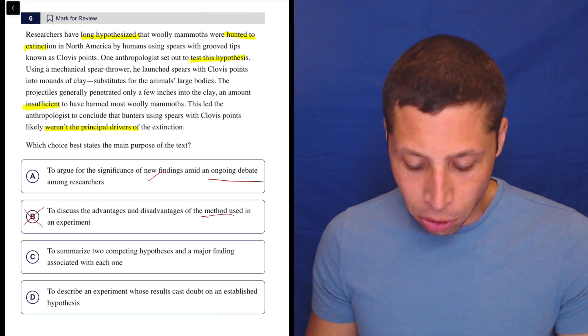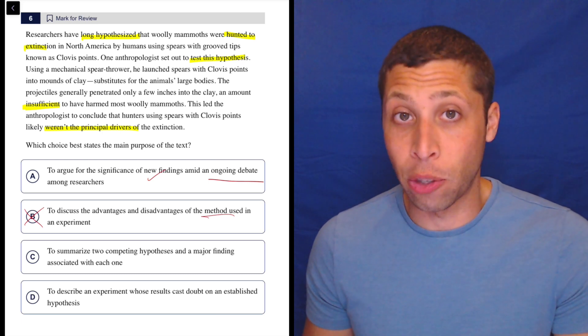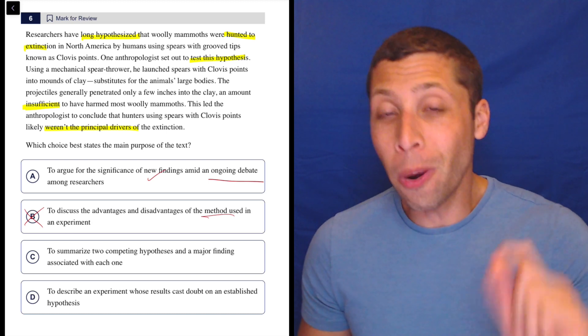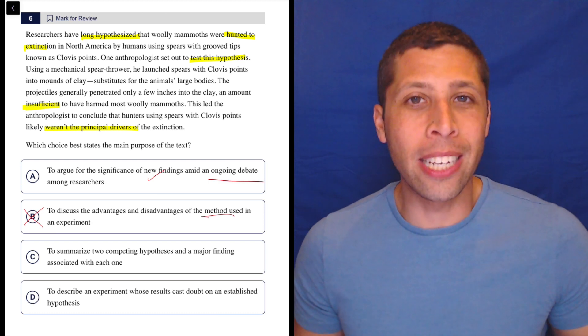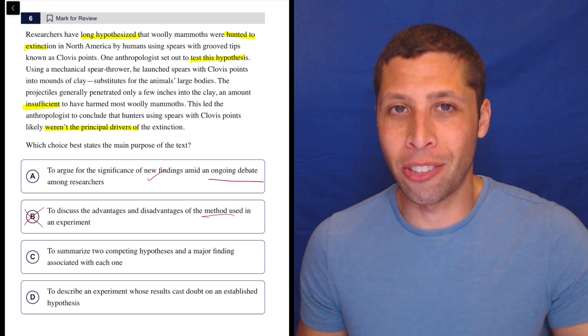C, to summarize two competing hypotheses and a major finding associated with each one. No. Remember, there was no other hypothesis at the start. Like I said, the same reason there's no debate. Everyone agreed that the mammoths were hunted to extinction by humans.